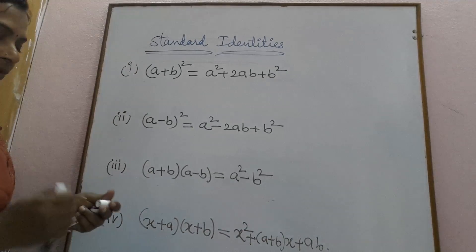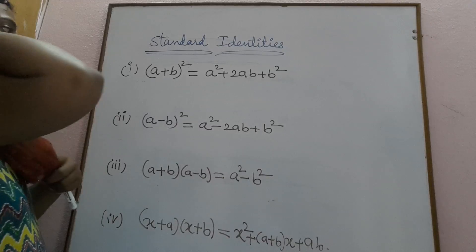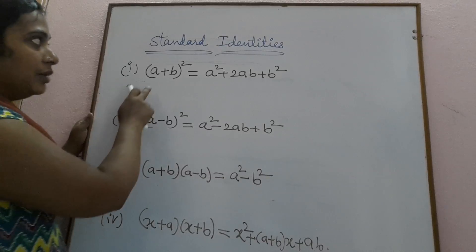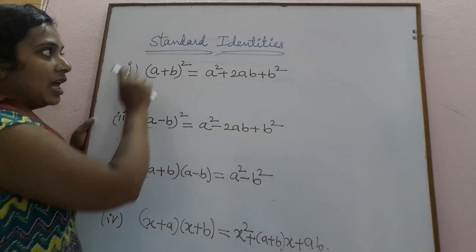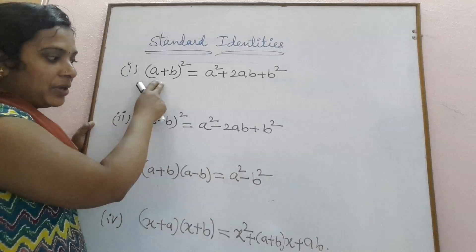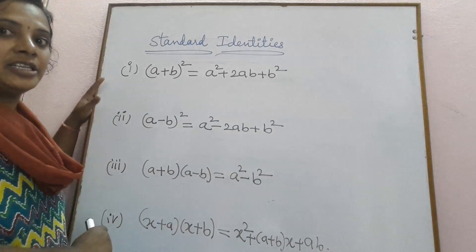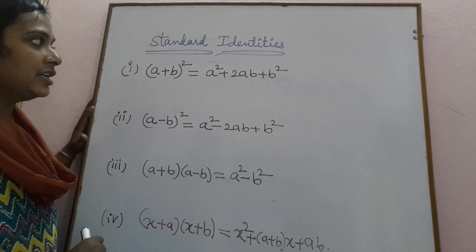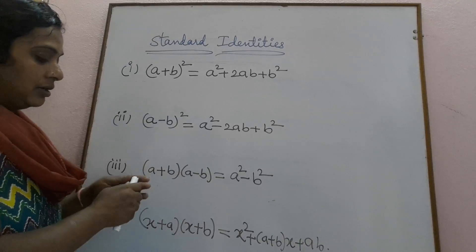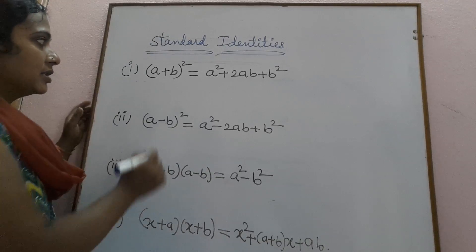How do we get these identities? These four identities are very important in algebraic expressions. We have to remember these four identities. By using them, we can simplify given expressions.